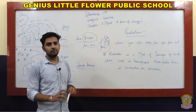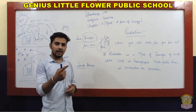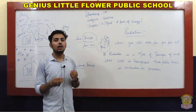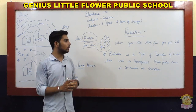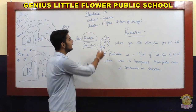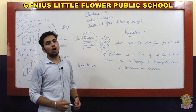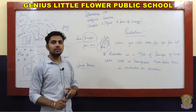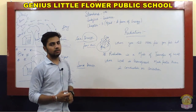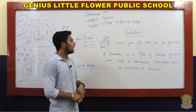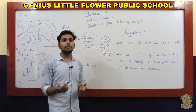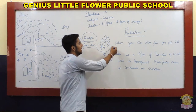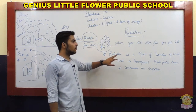For example, the sun emits light and when we sit in sunlight we feel warm, because the sun is emitting radiations. Radiation does not require any medium to travel — just like light. Even if you create a vacuum between you and the sunlight, the sunlight will still reach you. That process is called radiation.